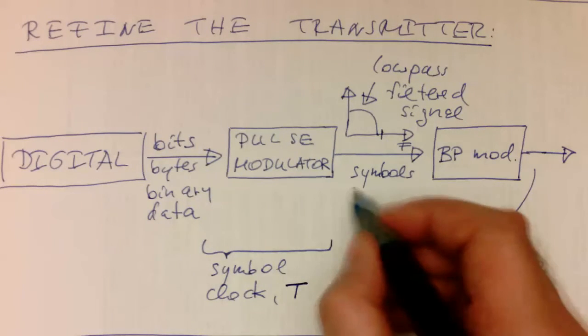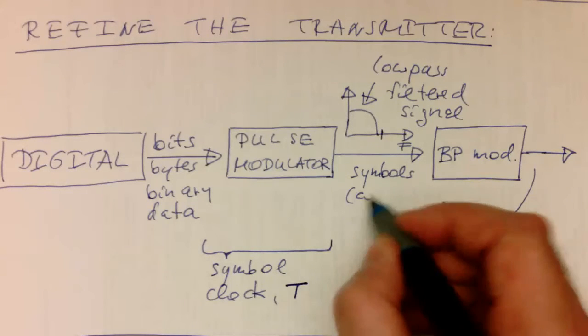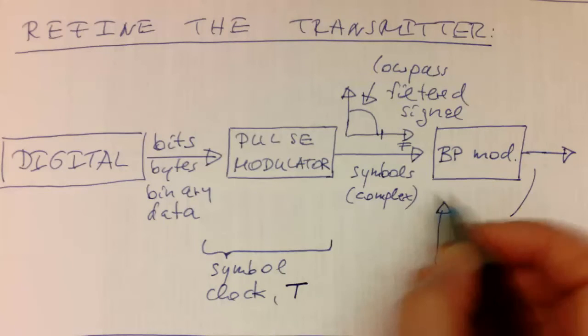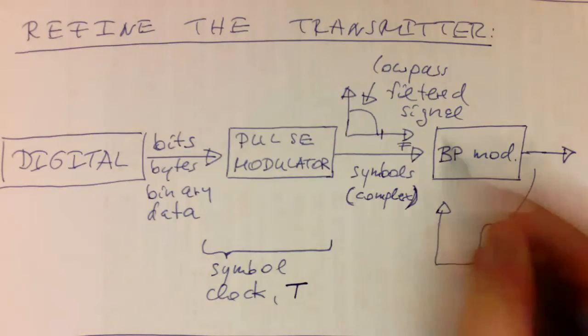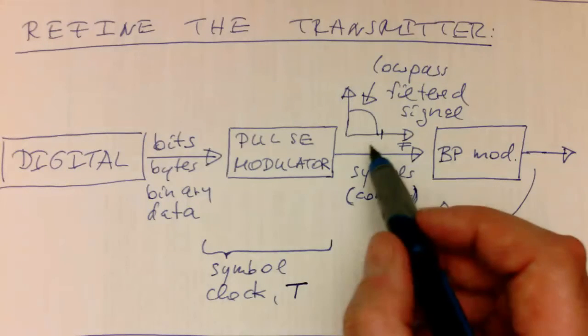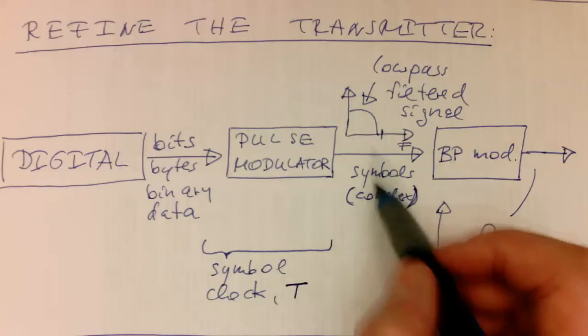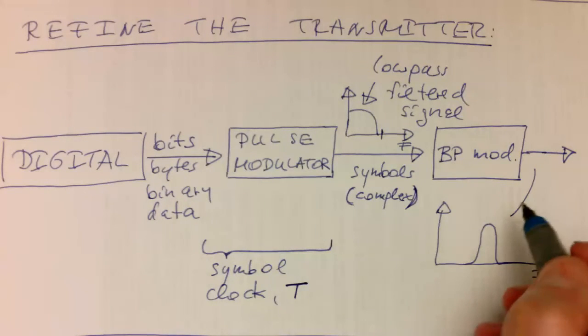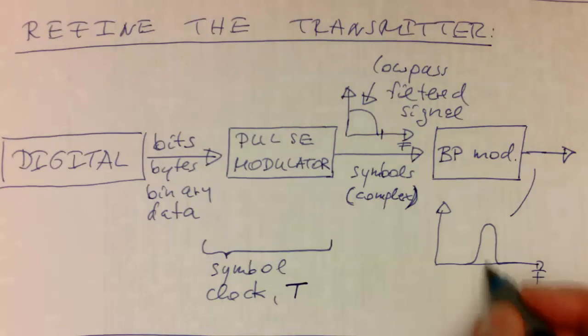Yes, it can be also complex. But crucial that this is a low-pass filtered signal, which is obviously quantized because it's still a digital system. And then this is modulated here with a carrier frequency. And then this generates this band-pass filtered signal.